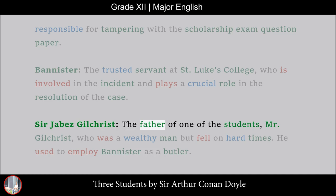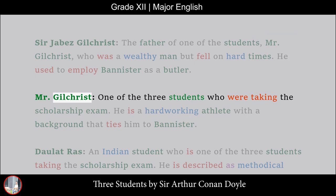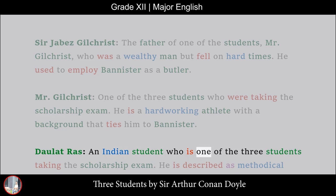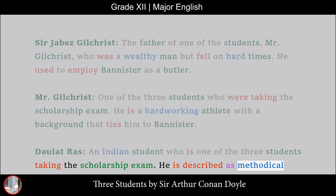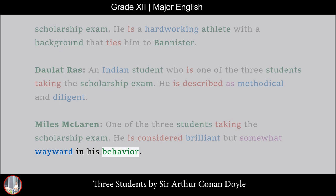Sir Jabez Gilchrist, the father of one of the students, Mr. Gilchrist, who was a wealthy man but fell on hard times. He used to employ Bannister as a butler. Mr. Gilchrist, one of the three students taking the scholarship exam, is a hardworking athlete with a background that ties him to Bannister. Dawlat Raz, an Indian student, is described as methodical and diligent. Miles McLaren, one of the three students, is considered brilliant but somewhat wayward in his behavior.